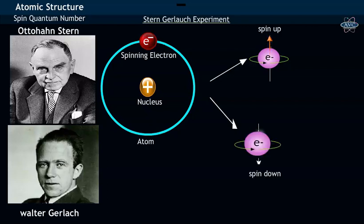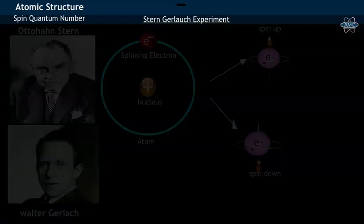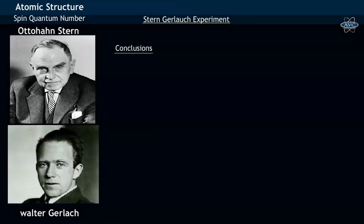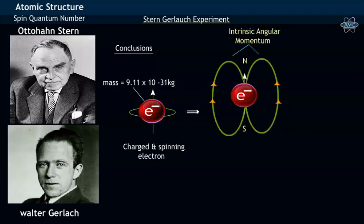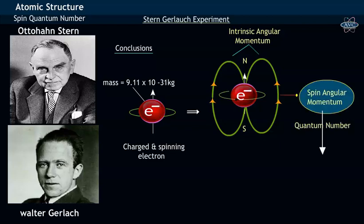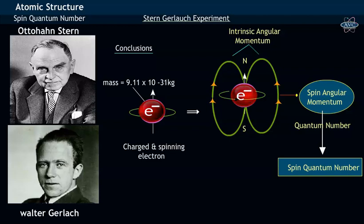From the experimental observations, Stern and Gerlach drew following conclusions. A charged and spinning electron with specific mass generates an intrinsic angular momentum, which is called as spin angular momentum. The quantum number which measures the spin angular momentum of an electron is called spin quantum number. Spin quantum number is represented by MS or capital S.